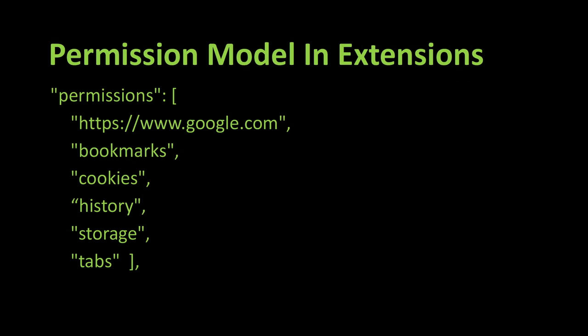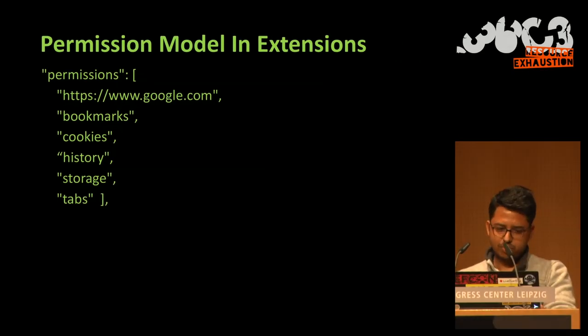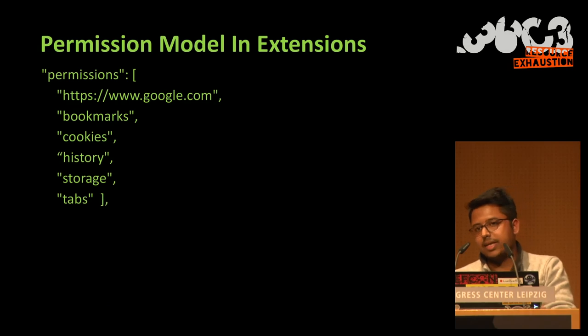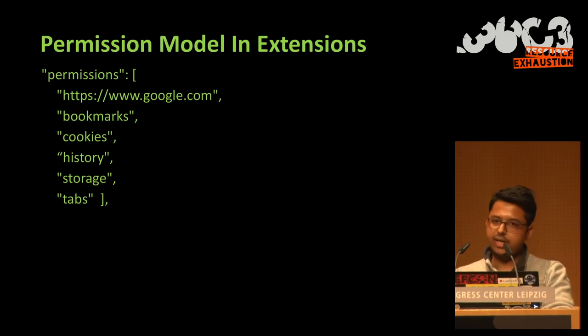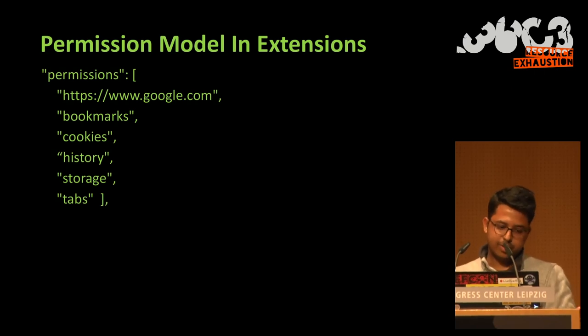Here's a quick example of a permission array. The first permission is https://www.google.com, which we'll see shortly. The next permissions are bookmark, cookies, history, storage, and tabs. If an extension has permissions for bookmarks and cookies, that means it can handle your bookmarks — it can manipulate them, edit them, remove them. The same goes for cookies, history, and other important browser permissions.